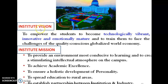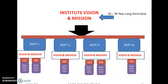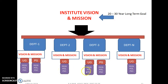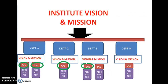Once the institute has a good vision and mission, various departments are established to achieve that vision and mission. Every department has its own vision and mission, and each department may have different programs such as PG and UG. Each program has different PEOs, PSOs, POs, and course outcomes. NBA will focus only on the specific program you apply for — UG or PG.